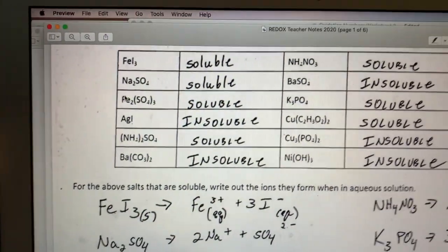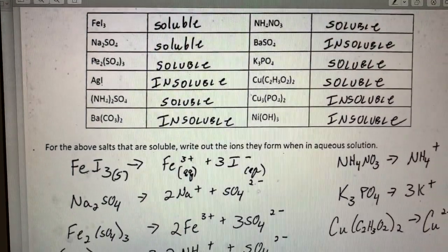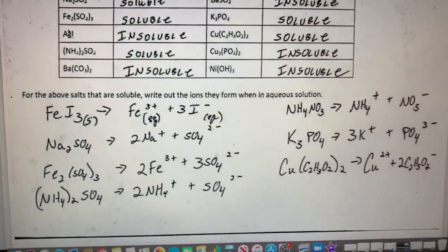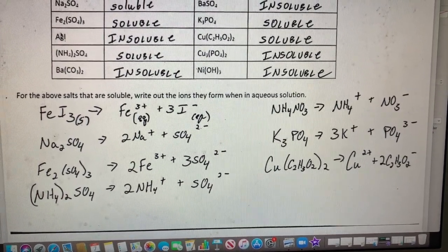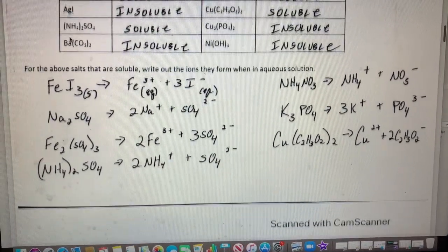This is what I'm talking about when writing what ions actually form. That's going to be really helpful when you do the net ionic equations. You can take a look here, pause if you need to, and you can look at the notes on my MCPS.